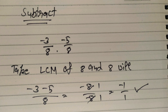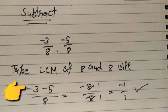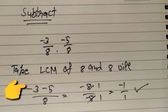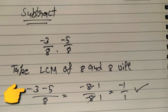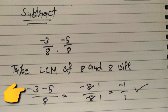Next question: subtract rational numbers. When we subtract two rational numbers, the result is also a rational number. Example: -3/8 minus 5/8. Since both denominators are the same, the LCM is 8. So: 8 ÷ 8 = 1, multiply with -3 gives -3; 8 ÷ 8 = 1, multiply with -5 gives -5. Now -3 - 5 = -8, and the denominator is 8. Simplifying -8/8 gives the answer -1.